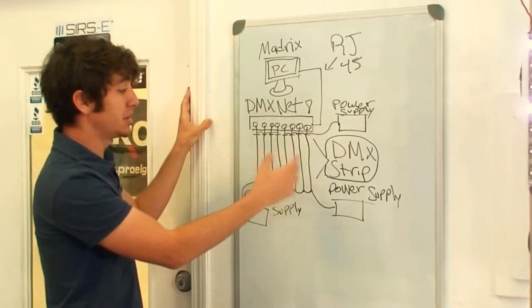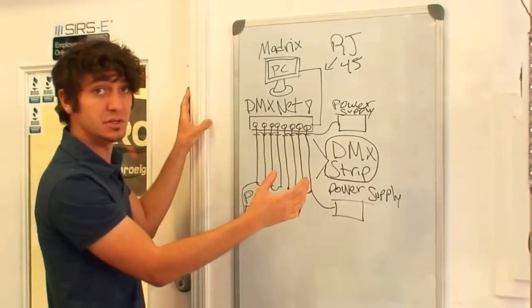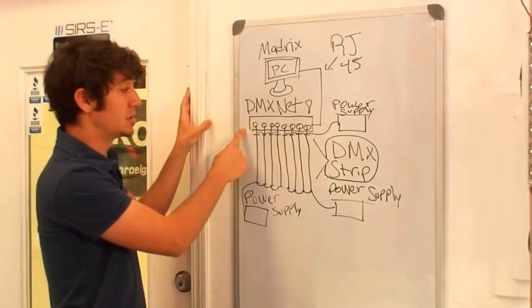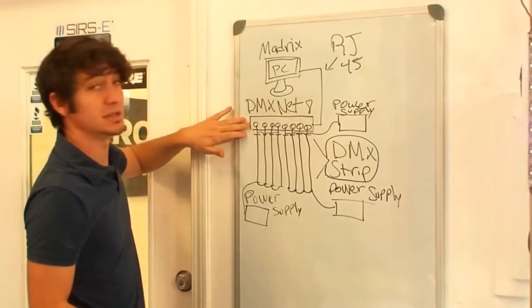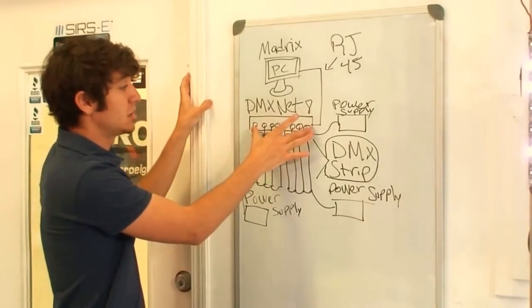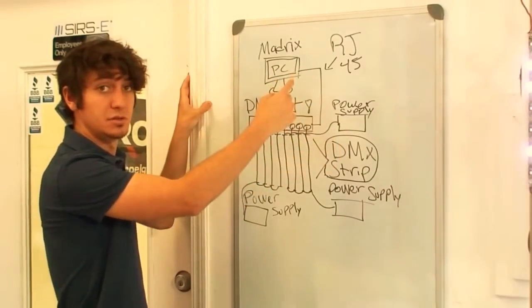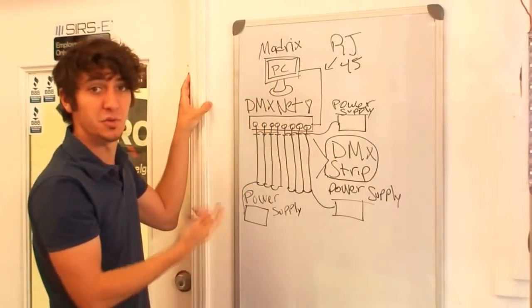And then depending on how many strips you are going to be using, you will know how many DMX net 8s you are going to need. So if you are going to do a bigger screen the more DMX net 8s you will need. If you are going to use more than one DMX net 8 you will need a network switch to connect them all together to your RJ45 port on your computer.